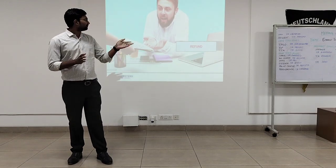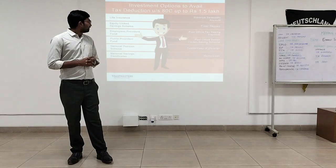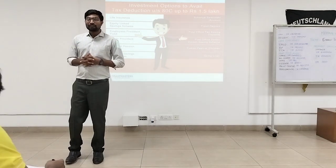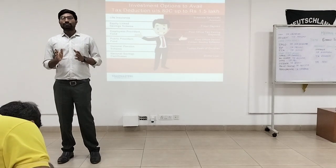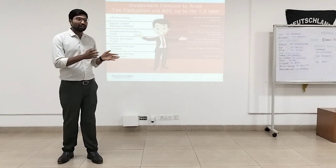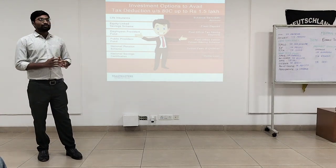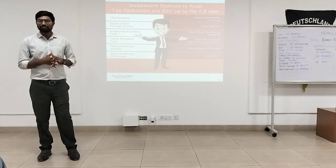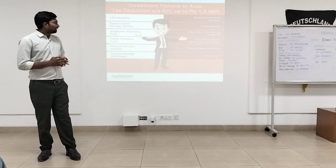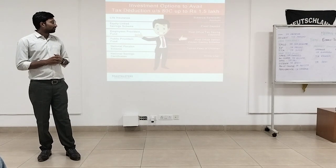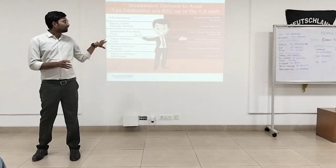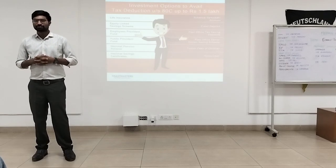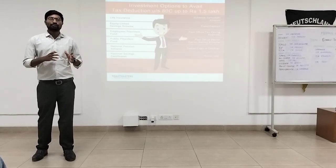Let me start with deductions. This is the section everyone may be aware of. You can claim up to 1.5 lakhs by investing in life insurance, provident fund, or if you pay tuition fees for your children. Even through fixed deposits or repaying your housing loan — with these investments or expenditures, you can claim up to 1.5 lakhs.